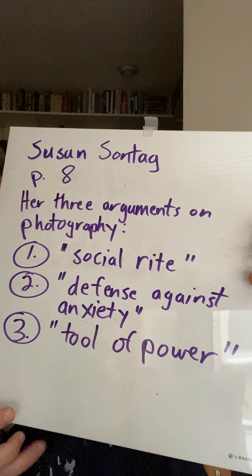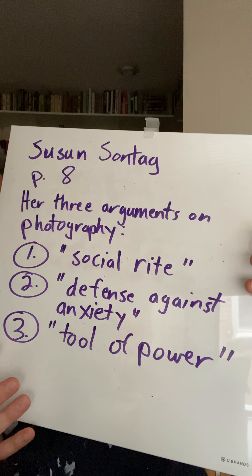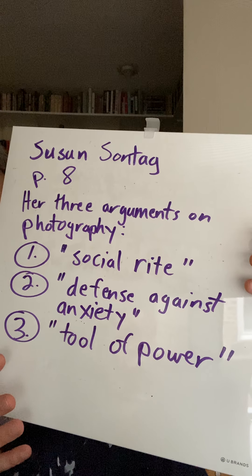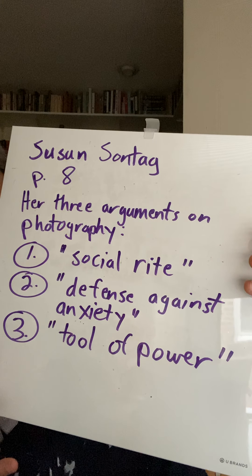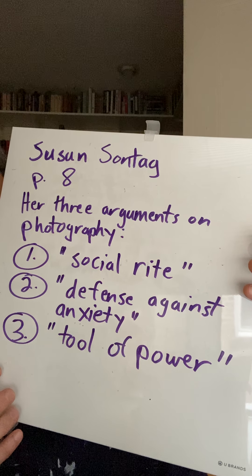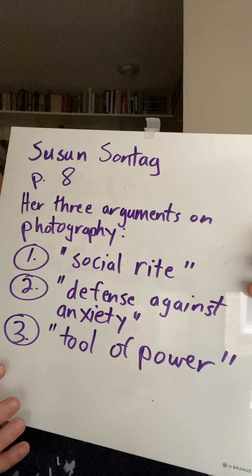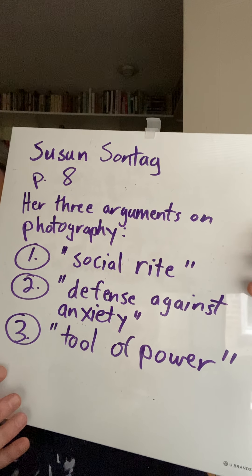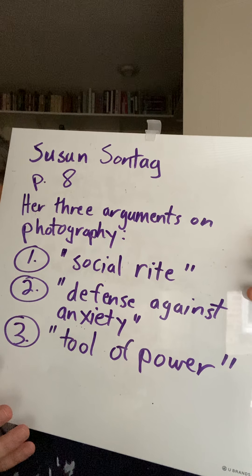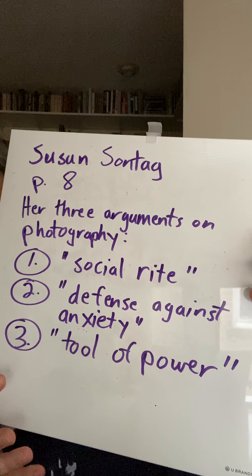So she structures the essay around those three major points: family photos, which she connects to the idea of a social right or social connections; and vacation photos, which she connects to the idea of feeling uncomfortable or anxious when you're traveling and trying to get situated and grounded.